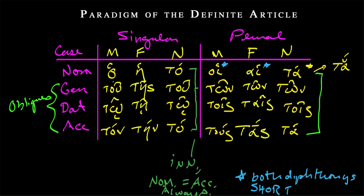So these, let's see, four by six, 24 forms are critical. They're the definite article and they show up all the time in Greek. So memorizing this paradigm, this example, this illustration is going to see you through a whole lot of work down the line.